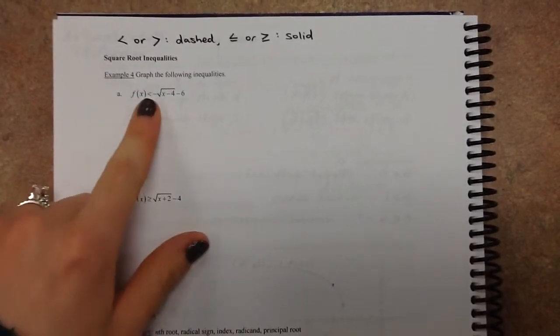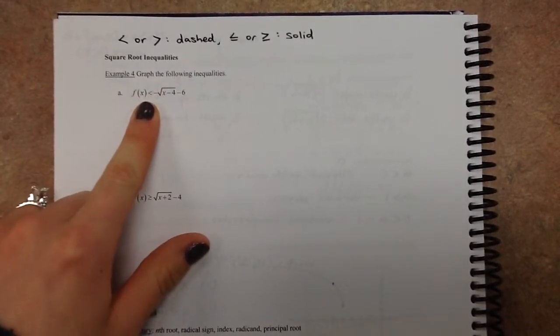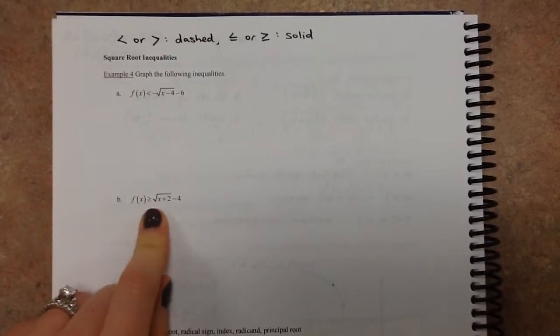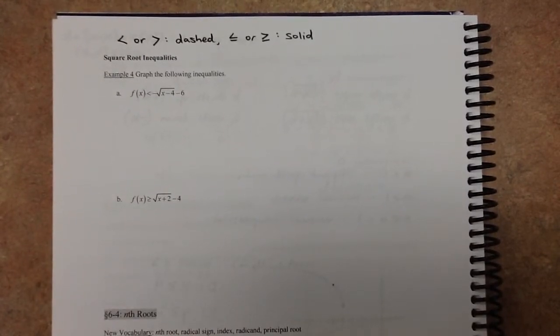And then the second thing to add, with these the less than literally means under the graph and the greater than means above the graph. That's not always true, but with these ones it is.